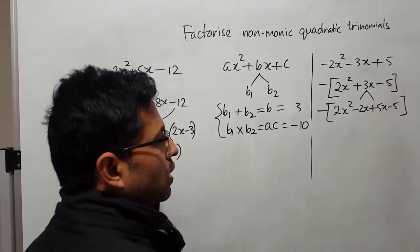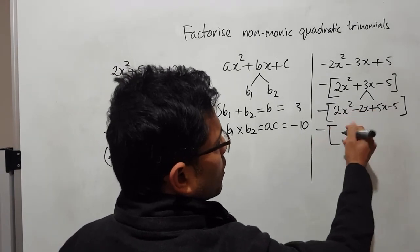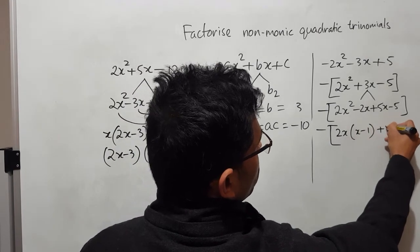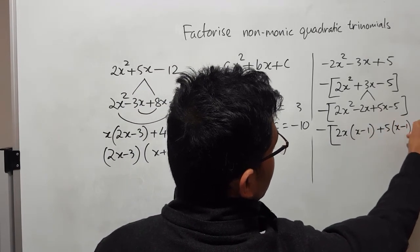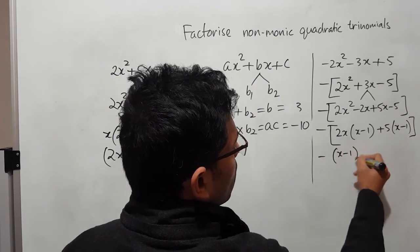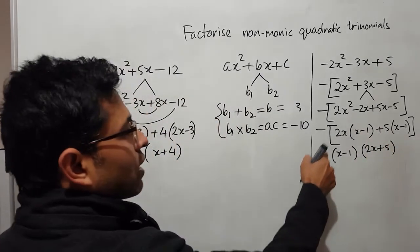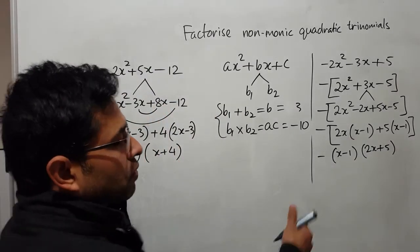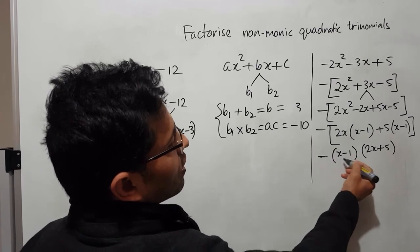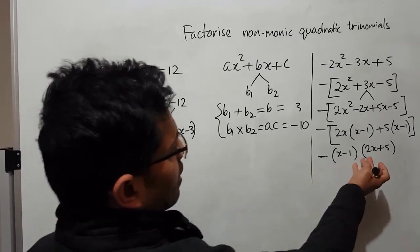Leaving the negative at the front, we do the grouping. Taking 2x as common gives x minus 1, and taking 5 as common also gives x minus 1 — the same factor, as expected. So taking x minus 1 as common, we have 2x plus 5 left. The negative out front multiplies with the whole expression, giving minus (x minus 1)(2x plus 5).